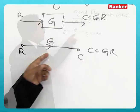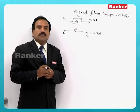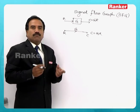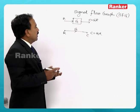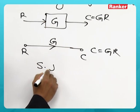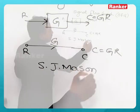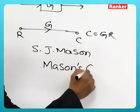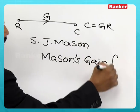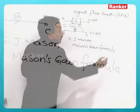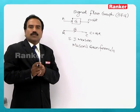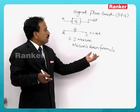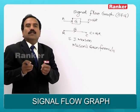The advantage of signal flow graph is that there are no complex rules to find out the overall transfer function of the system. Instead, there is a formula invented by S. J. Mason, known as Mason's Gain Formula. You need to compute certain parameters, which we are going to define, and substitute them into Mason's Gain Formula to get the overall transfer function.